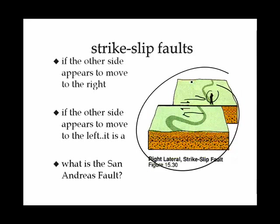The San Andreas — one of the most important strike-slip faults in the world — is right lateral.